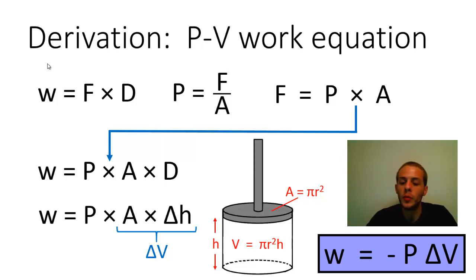So we get work equals minus p ΔV. And you might be asking yourself, well why is it minus p ΔV, not just p ΔV? Well the reason why we tack on that minus sign is because it allows us to keep the convention that we're used to, the sign convention, in which anything done on the system is considered positive, and anything done on the surroundings is considered negative.